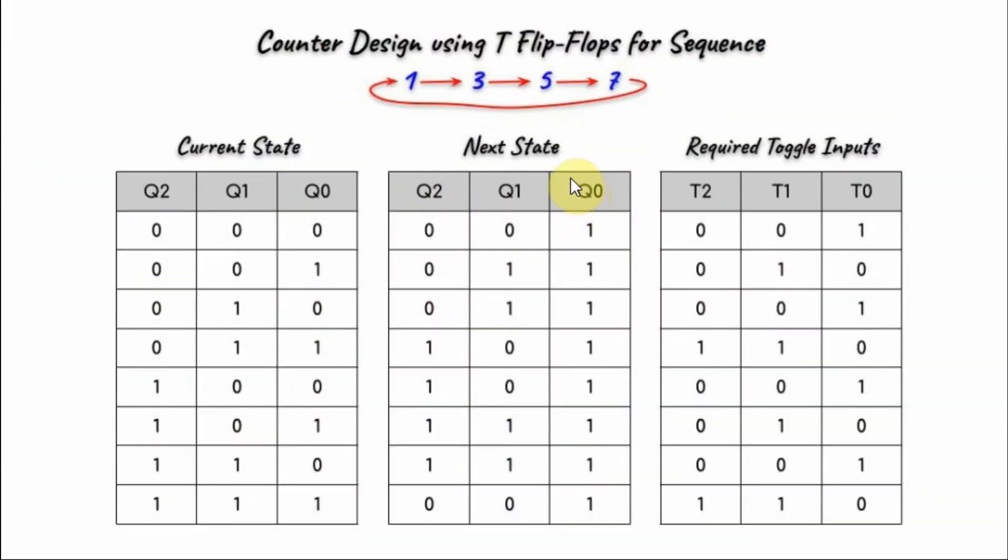For this design, we need 3 flip-flops to represent the sequence of numbers 1, 3, 5, and 7. The outputs of the flip-flops are represented by Q0, Q1, and Q2, where Q0 is the least significant bit and Q2 is the most significant bit.